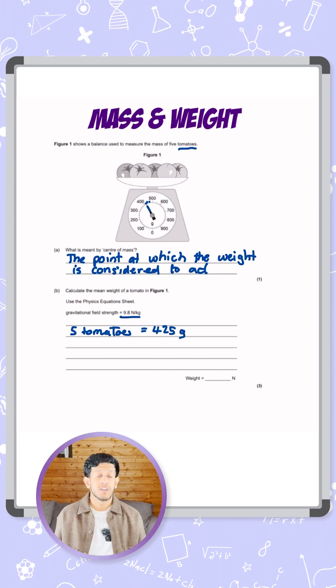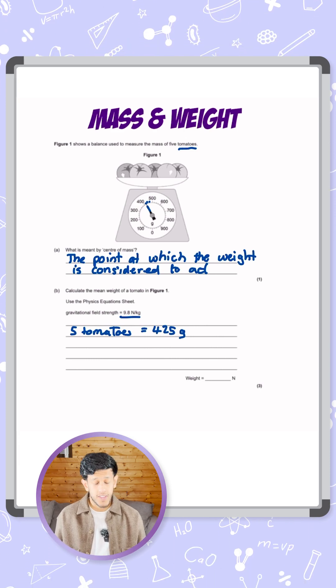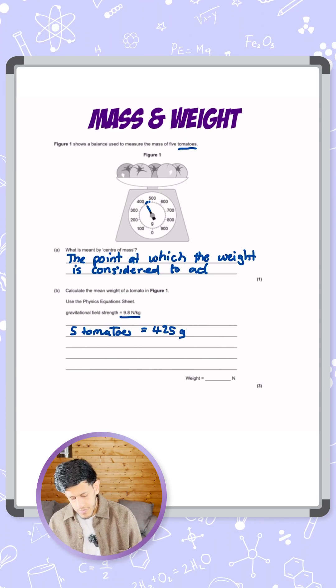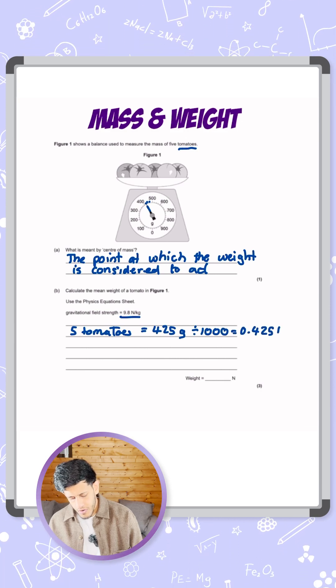Now what we need to consider is that mass's standard unit is kilograms, not grams, so we need to convert this. To turn grams into kilograms we divide by a thousand, giving us 0.425 kilograms.